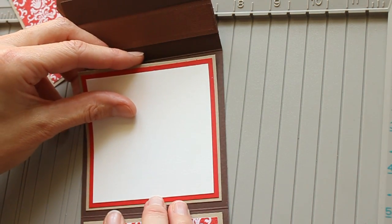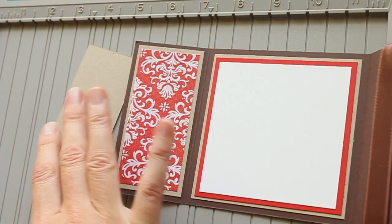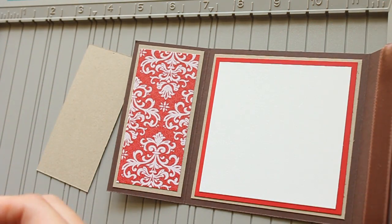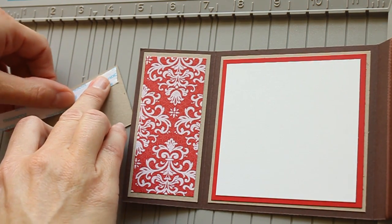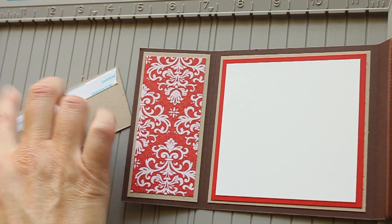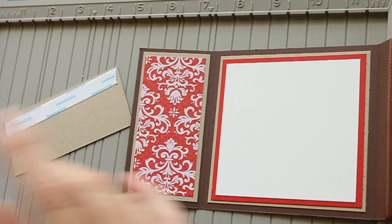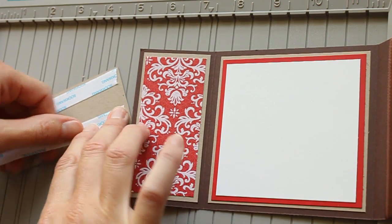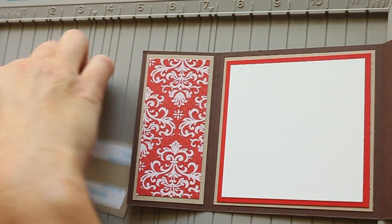When I want to adhere something over a ribbon, I use score tape to make sure that layer won't come off. I'm out of the quarter inch wide score tape, so right now I'm using I think it's three-eighths, maybe half an inch.